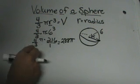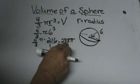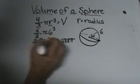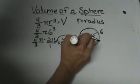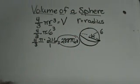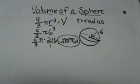4 times 216 divided by 3 is 288. Then the pi comes over and that is our answer. It is in units cubed. That is how you find the volume of a sphere.